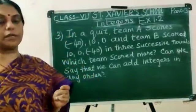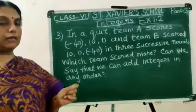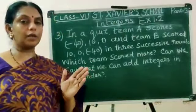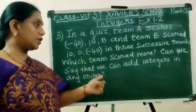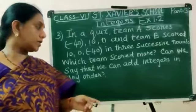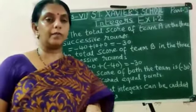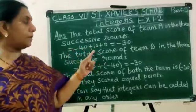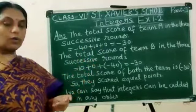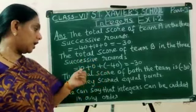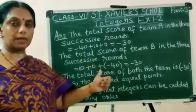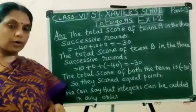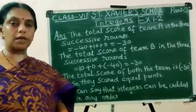Question number 3: Team A scores minus 40, 10, 0 and team B scored 10, 0 and minus 40 in 3 successive rounds. Which team scored more? The total score of team A: minus 40 plus 10 plus 0 equals minus 30. The total score of team B: 10 plus 0 plus (minus 40) equals minus 30. Both teams scored equal points. We can say that integers can be added in any order.